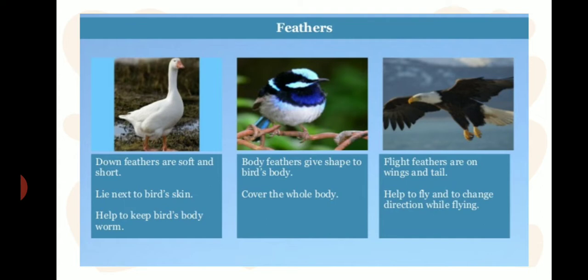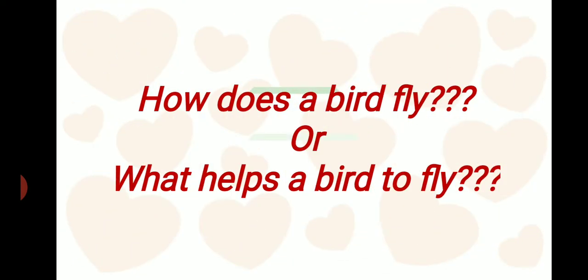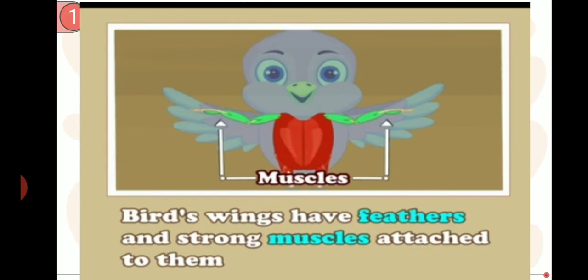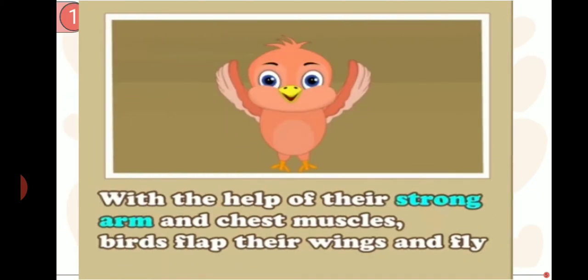Now the next topic is: how does a bird fly, or what helps a bird to fly? What features in the bird's body help it to fly? First of all, birds have wings to fly. These wings have feathers and strong muscles attached to them. Because of strong arm and chest muscles, a bird can flap its wings for a longer time and it can fly.